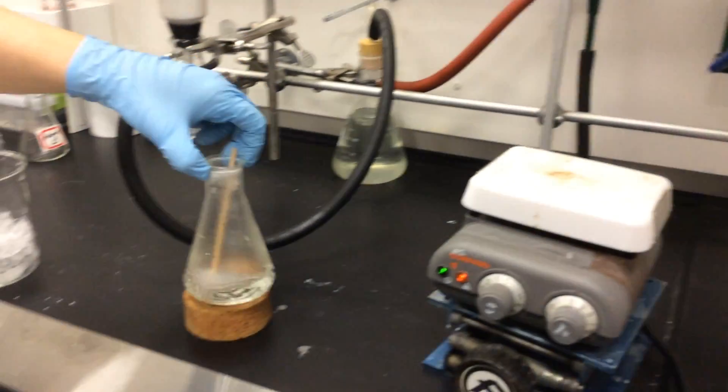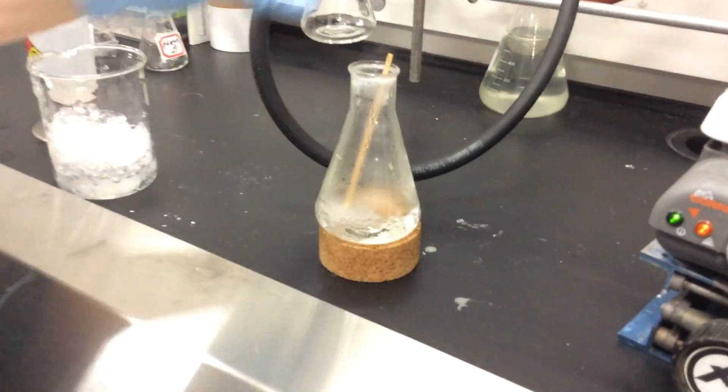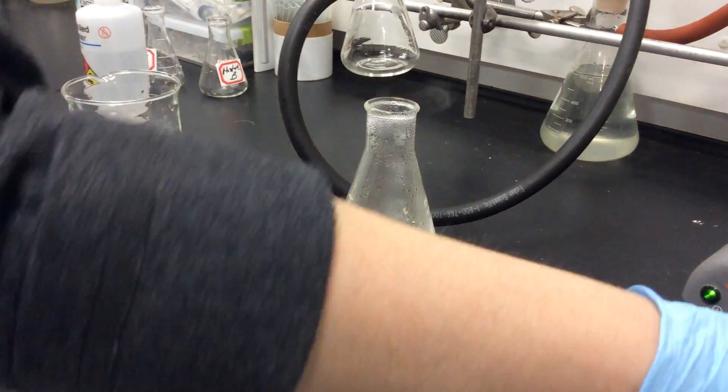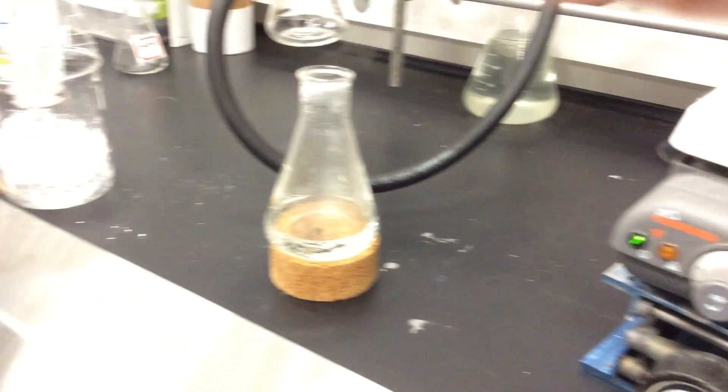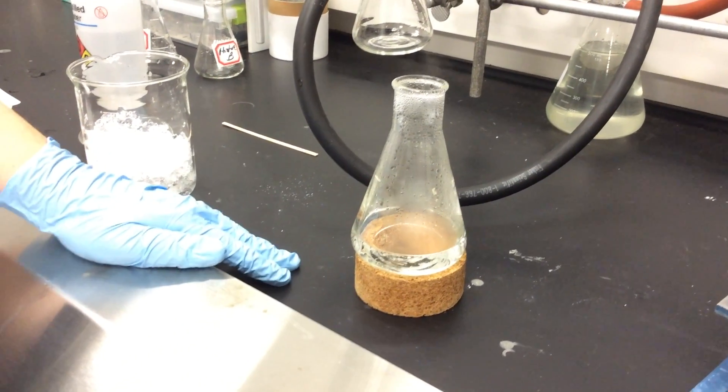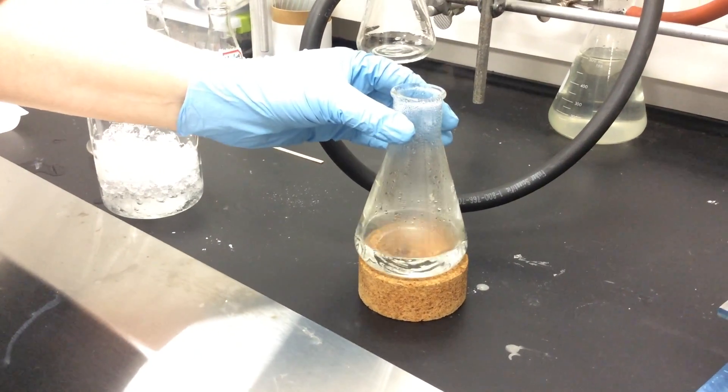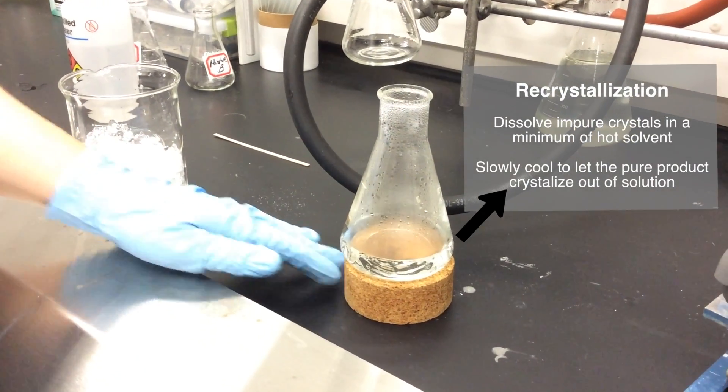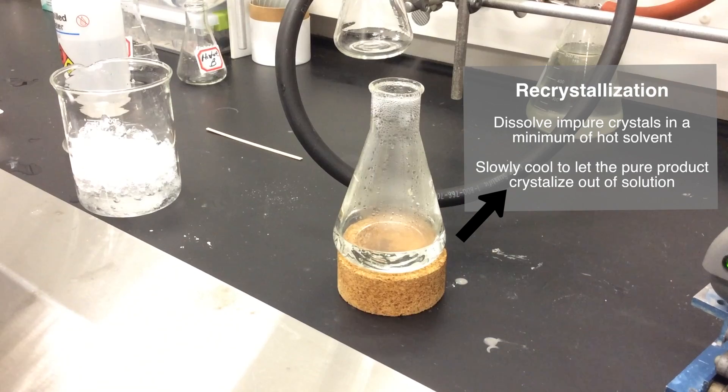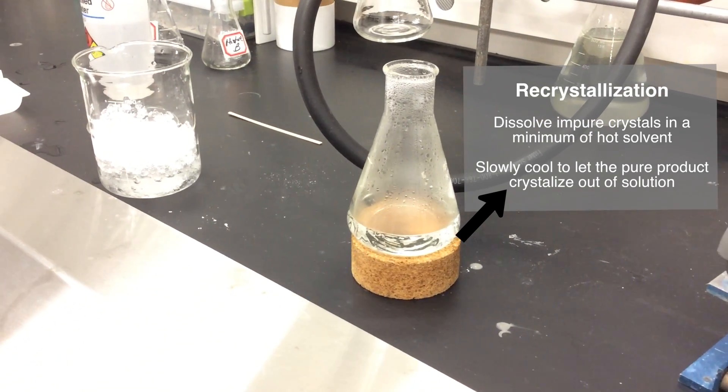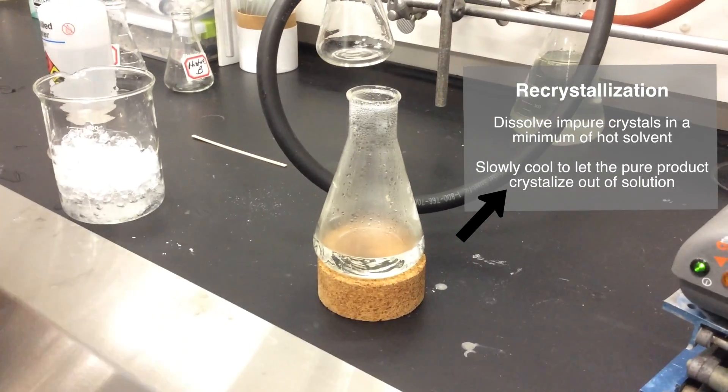And once the solid's all dissolved, we'll put it on a cork ring so it can cool slowly, take out our coffee stirrer, turn off our hot plate, and just let that sit. Let that sit until it comes to room temperature. We want to make sure that we have slow cooling so all the pure crystals will fall out of solution and all the impurities will stay in solution.